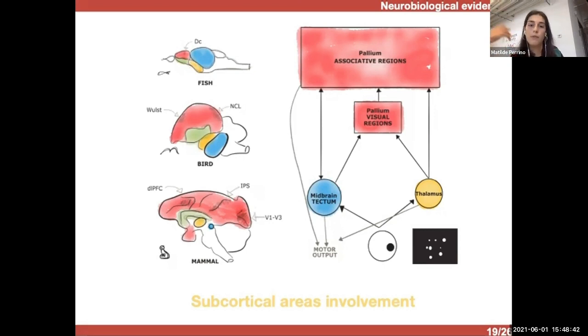However, numerical perception responds to Weber's law, as we said before, and responds also to sensory adaptation, similarly to other primary sensory properties such as size or color, and also animals without paleo homologues, such as insects or even artificial neural networks are able to perform this type of task.